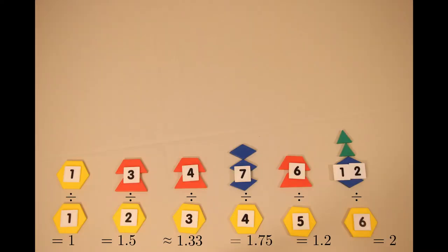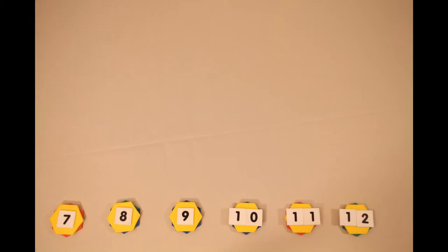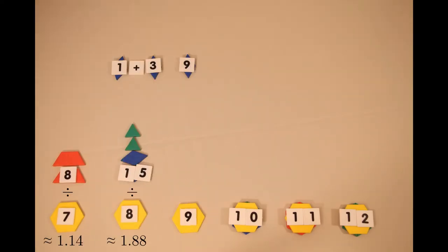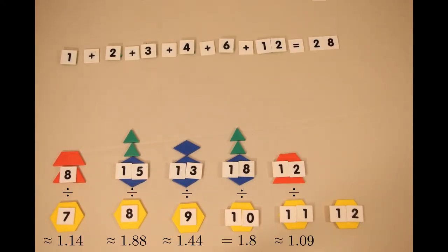Based on what we've found up to this point, we can see that every prime is going to be deficient, since the sum 1 plus 1 over p can never be bigger than 2. But we haven't found any abundant numbers yet. To find our first number with an abundancy bigger than 2, we have to go all the way out to 12.